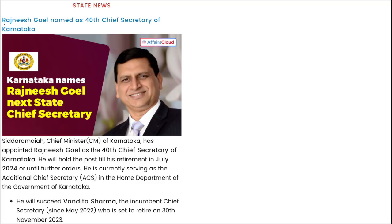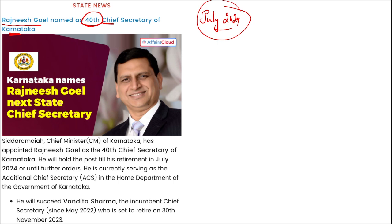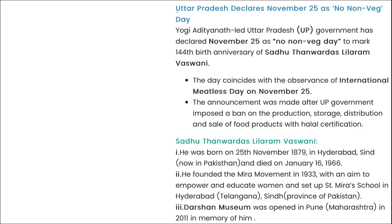Regarding state news: Rajneesh Goel has been named as the 40th Chief Secretary of Karnataka. Chief Minister Siddaramaiah appointed Rajneesh Goel, who will hold the post until his retirement in July 2024 or until further orders. He will succeed Vandita Sharma.